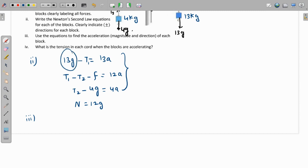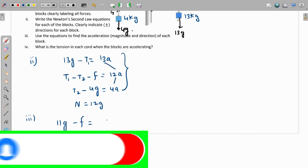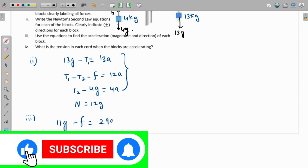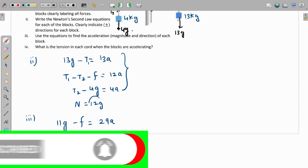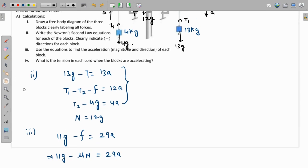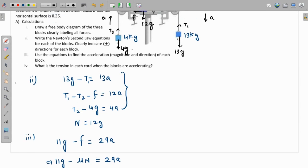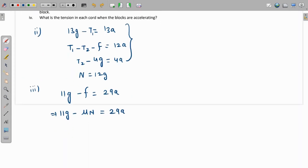Now we'll add the first three equations so that the tensions are cancelled, and 13g minus 4g will become 11g, and this minus F will remain as it is. And 13 plus 12 is 25, 25 plus 4 is 29a. So what is the friction? Friction is mu times the normal reaction and that is equal to 29a.